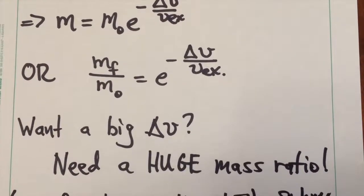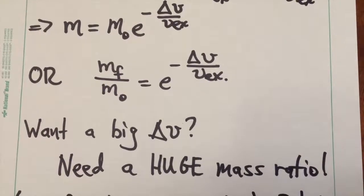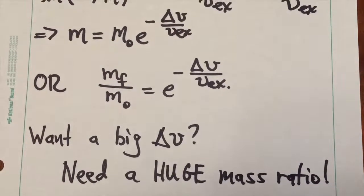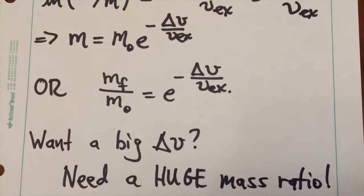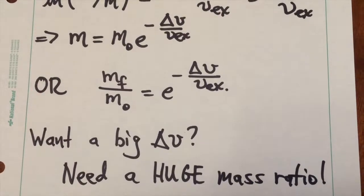So what this means is, if you need a big delta v, if you've got to climb out of a big gravitational well, say the gravitational well of the Earth, you're going to need an enormous mass ratio. In other words, an enormous amount of the material in your rocket that you launch has to be expelled as exhaust.